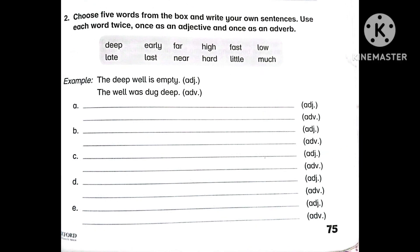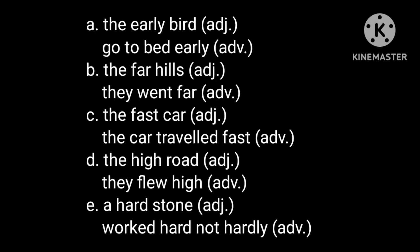Next is Number Two: Choose five words from the box and write your own sentences. Use each word twice — once as an adjective and once as an adverb, making two sentences for each word. The words given are: deep, early, far, high, fast, low, late, last, near, hot, little, and much. For example: 'The deep well is empty' — here 'deep' is used as an adjective. 'The well was dug deep' — here 'deep' is used as an adverb.